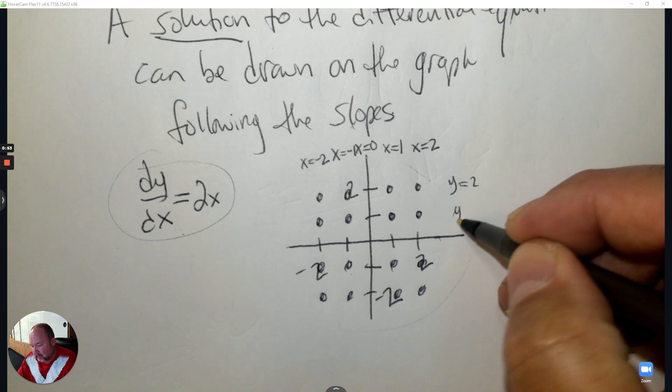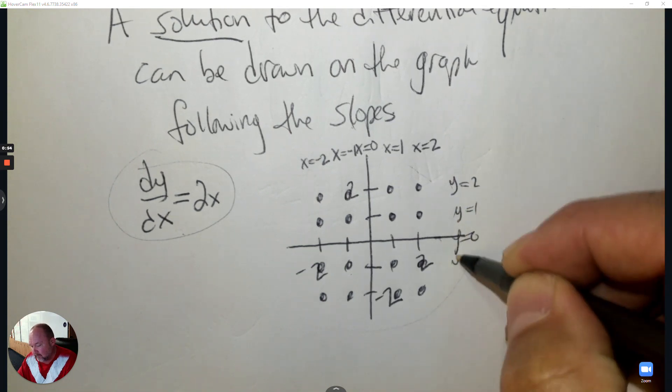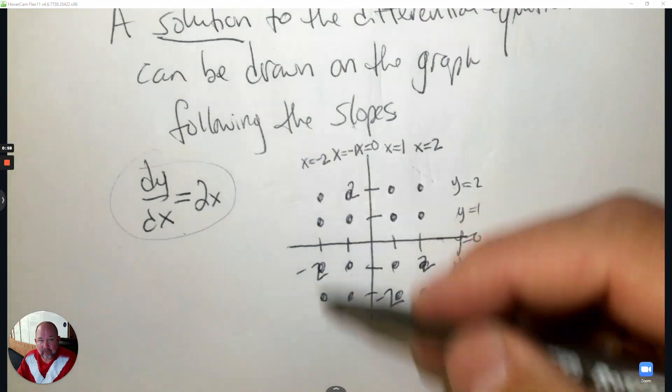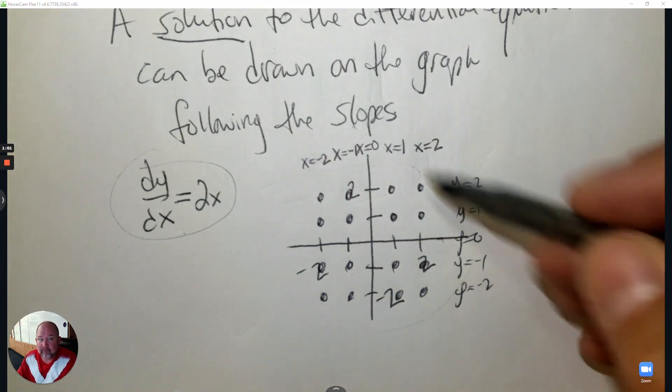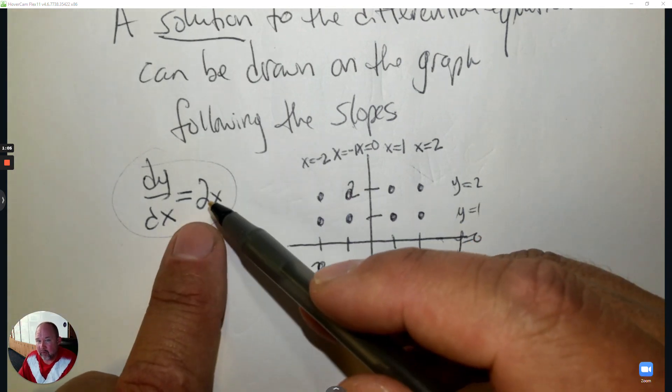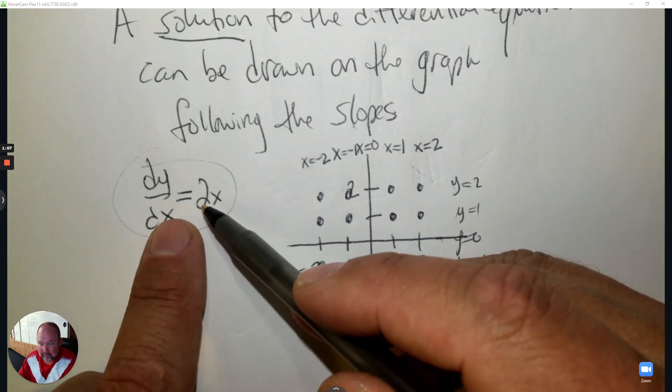Like here would be y equals 2, y equals 1, y equals 0, and negative 1, negative 2. Sometimes it's only x, sometimes it involves both, and that takes longer. But for this one, all you have to do is know the x coordinate and multiply it times 2.